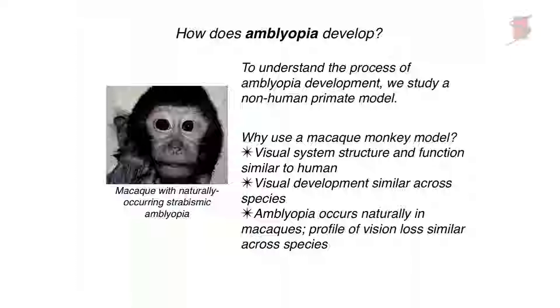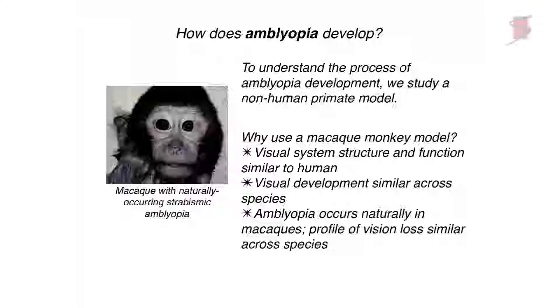Visual development between humans and non-human primates is very, very similar — it's important to have similar developmental mechanisms in the species you're studying. Amblyopia actually occurs naturally in non-human primates; this is a picture of a naturally strabismic macaque who also developed amblyopia as a result. We generally study this under experimental conditions that mimic the human conditions, but the fact that it naturally occurs means the system sustains insult similarly to humans. The profile of vision loss is very similar across species — this is a really good animal model.